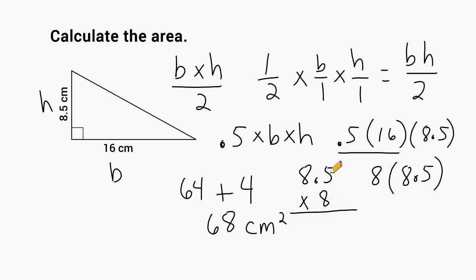So we would take 8 times 5, which is 40, and carry the 4, and then we have 8 times 8, which is 64, plus 4 more is 68.